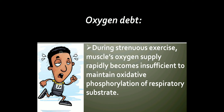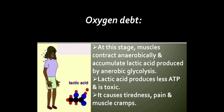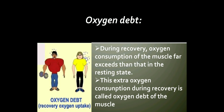Oxygen debt: During strenuous exercise, the muscles' oxygen supply rapidly becomes insufficient to maintain oxidative phosphorylation of the respiratory substrate. At this stage, muscles contract anaerobically and start accumulating lactic acid, which is produced by anaerobic glycolysis. Lactic acid produces less ATP and is toxic, causing tiredness, pain, and muscle cramps. During recovery, oxygen consumption of the muscle far exceeds that of the resting state. This extra oxygen consumed during recovery is called the oxygen debt of the muscle.